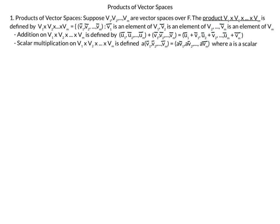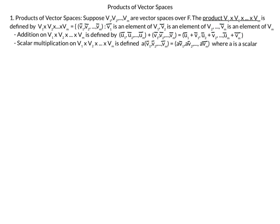For scalar multiplication, if we have an m-tuple (V1, V2, ..., Vm) from the product of vector spaces and we multiply by a scalar, the scalar just multiplies each component. So we get a·V1, a·V2, up to a·Vm. For my first example I'm going to use V1 = {1, 2} and V2 = {3, 4, 5}. The first thing to know is V1 and V2 are not vector spaces — they don't have the additive identity and they're not closed. They are sets. Vector spaces are sets too, along with operations of addition and scalar multiplication satisfying certain properties.